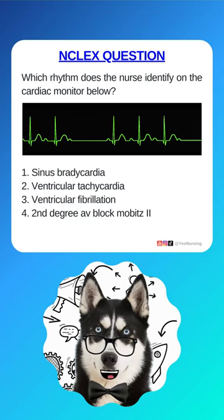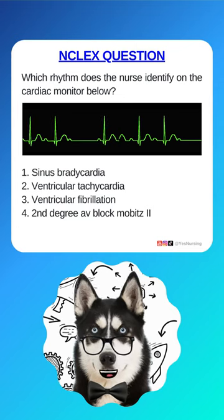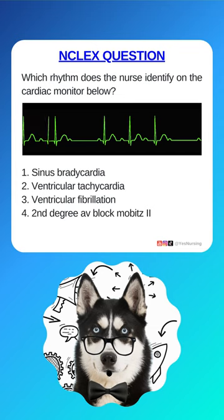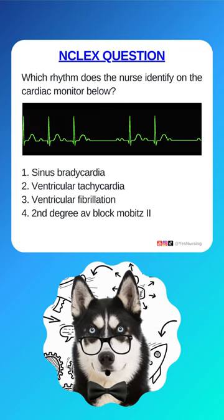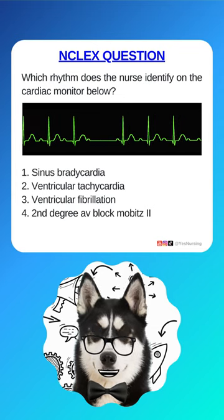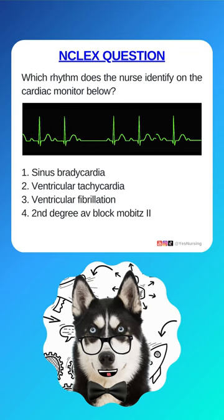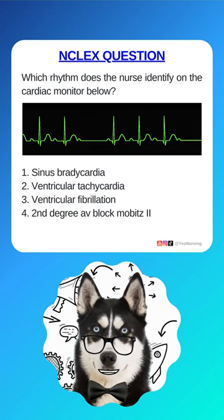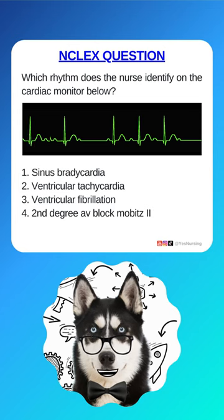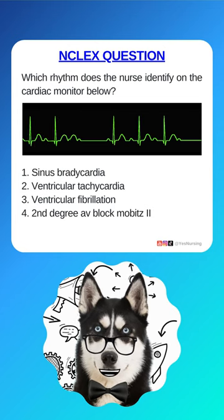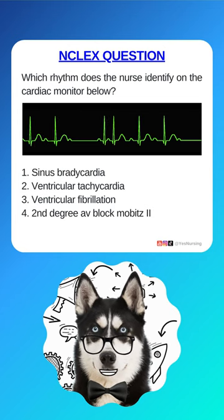Which rhythm does the nurse identify on the cardiac monitor below? 1. Sinus bradycardia, 2. Ventricular tachycardia, 3. Ventricular fibrillation, or 4. 2nd-degree AV-block Mobitz II. Pause the video, comment your answer, and press play to see the correct choice.